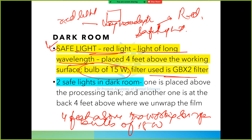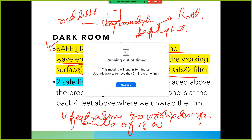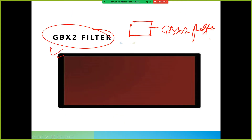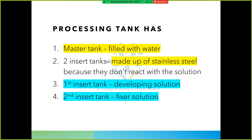There must be two safe lights in the darkroom. One is placed above the processing tank, and another one is at the back, four feet above where we unwrap the film. So there should be two safe lights - one above the processing tank and one above the film unwrapping area. The filter used is the GBX2 filter.